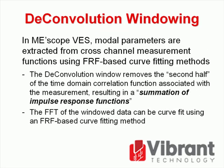In Emiscope VES, modal parameters are extracted from cross-channel measurement functions using FRF-based curve fitting methods. However, before FRF-based curve fitting can be applied to a set of operating measurements, they must be windowed using a deconvolution window. The deconvolution window removes the second half of the time domain correlation function associated with the measurement, resulting in a summation of impulse response functions. The FFT of the windowed data can then be curve fit using an FRF-based curve fitting method.